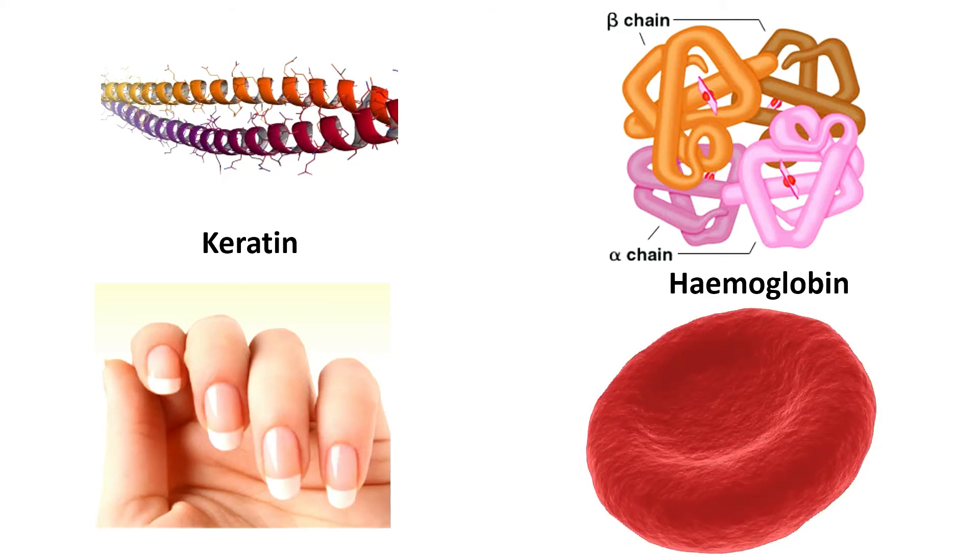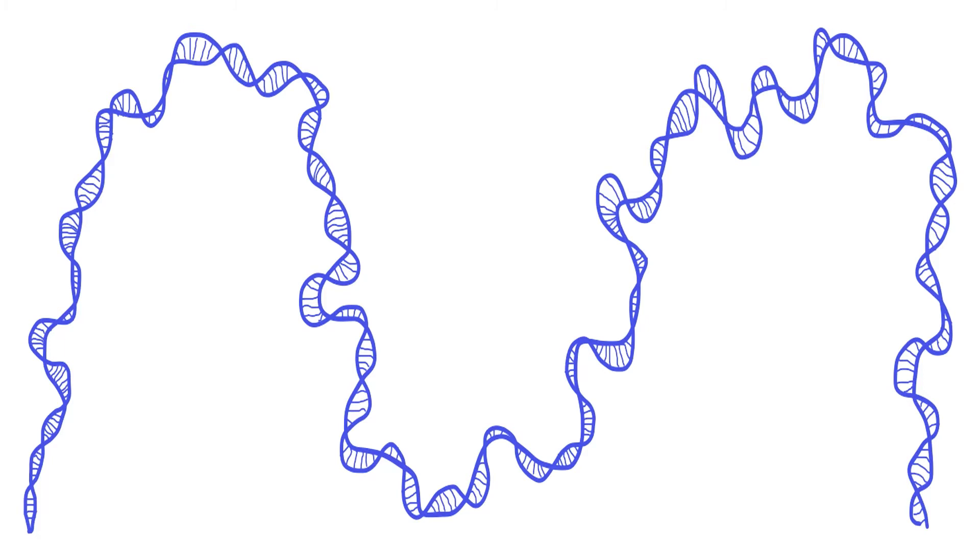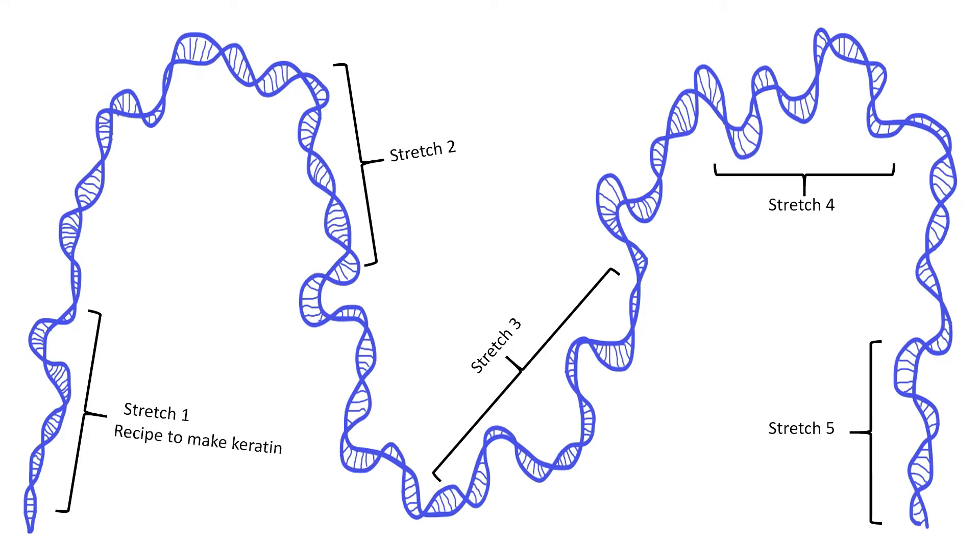This information is stored in different stretches of our DNA. Each stretch of DNA containing information to make a particular protein is known as a gene.